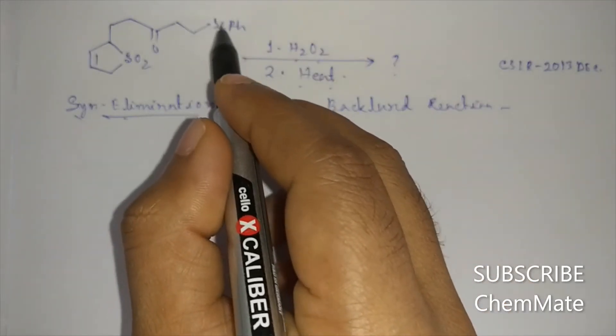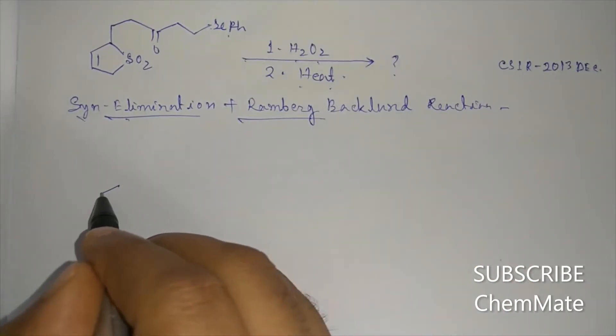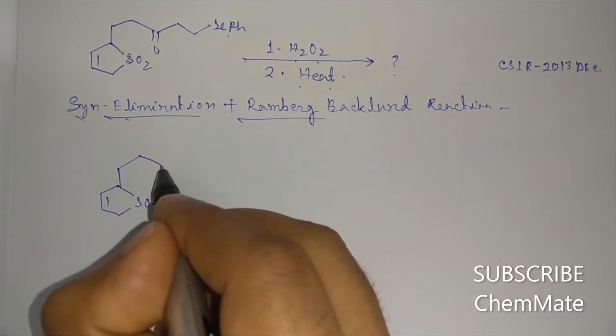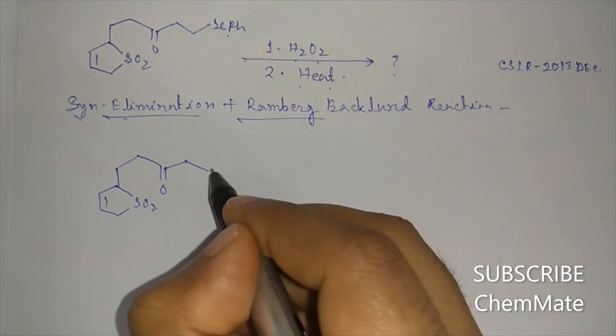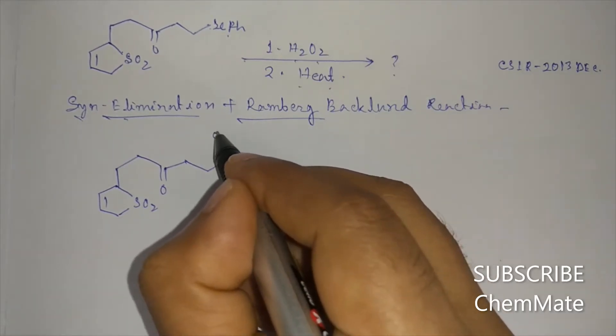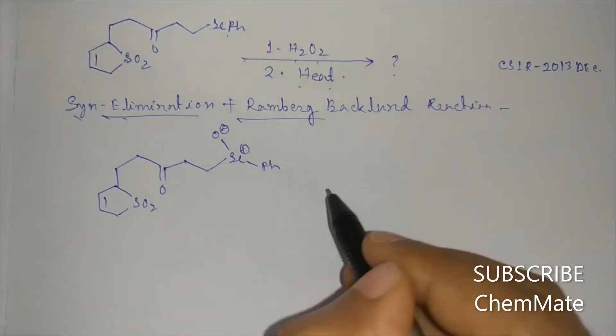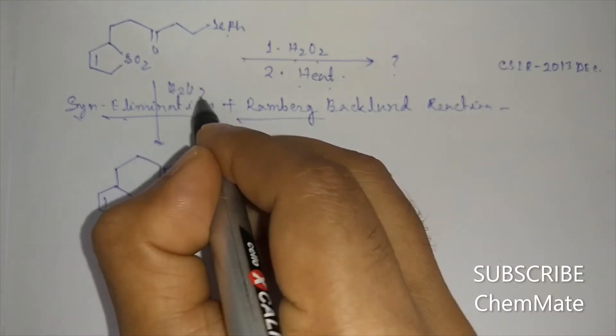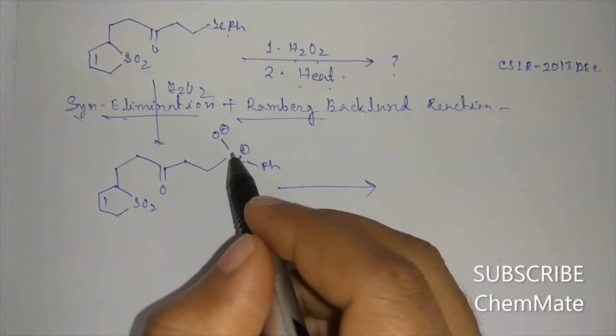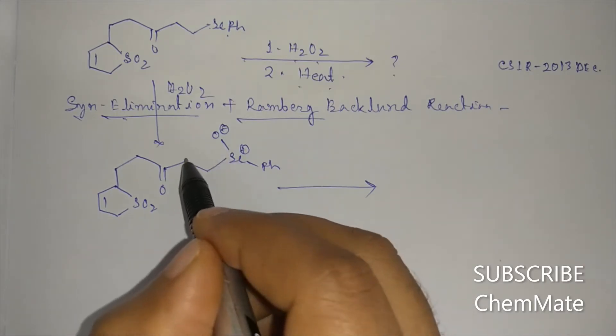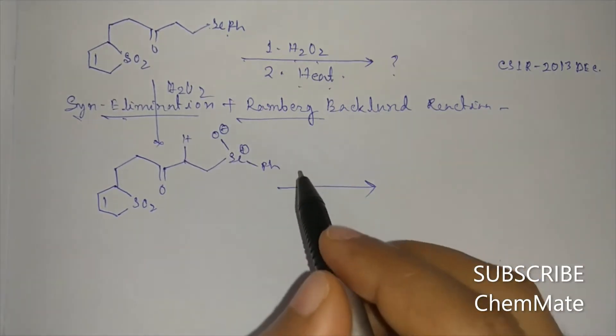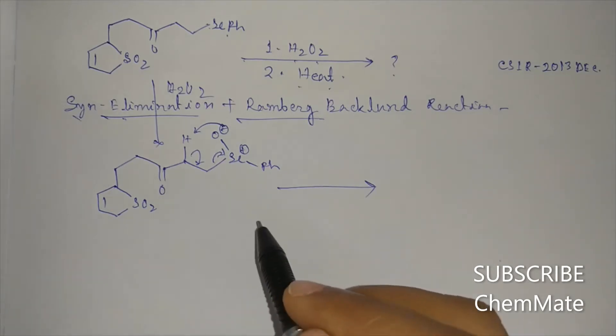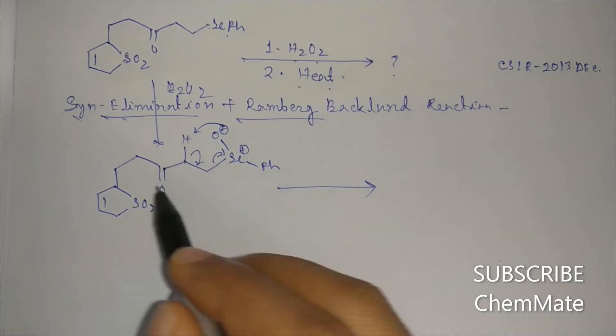with H2O2, then selenoxide will be formed. That means it will be O minus Se plus. If it is treated with H2O2, then this selenoxide will be formed, and from this selenoxide, syn elimination reaction will occur. That means it will take this proton, this group will eliminate, meaning an alpha beta unsaturated ketone will be formed here.